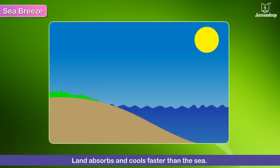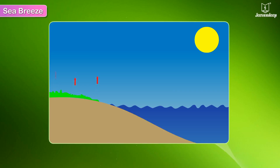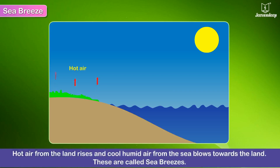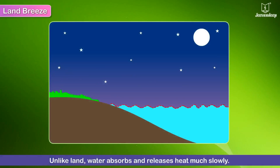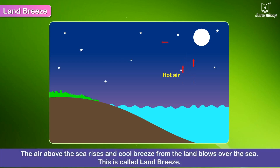Sea breeze: land absorbs and cools faster than the sea. Post afternoon, when the Earth releases heat, the hot air from the land rises and cool, humid air from the sea blows towards the land — these are called sea breezes. Land breeze: unlike land, water absorbs and releases heat much more slowly. So at night, when the land is cooler than the sea, the air above the sea rises and a cool breeze from the land blows over the sea — this is called land breeze.